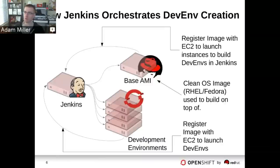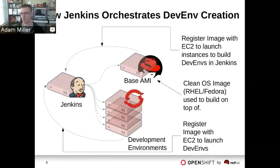We create these DevEnvs automatically. We have a Jenkins server that orchestrates all DevEnv creation. We queue them off based on new git commits to master that have been merged, and off new updates to the base image. We have a clean OS — RHEL or Fedora — and since CentOS has joined the greater Red Hat family, we've also added CentOS to the mix.